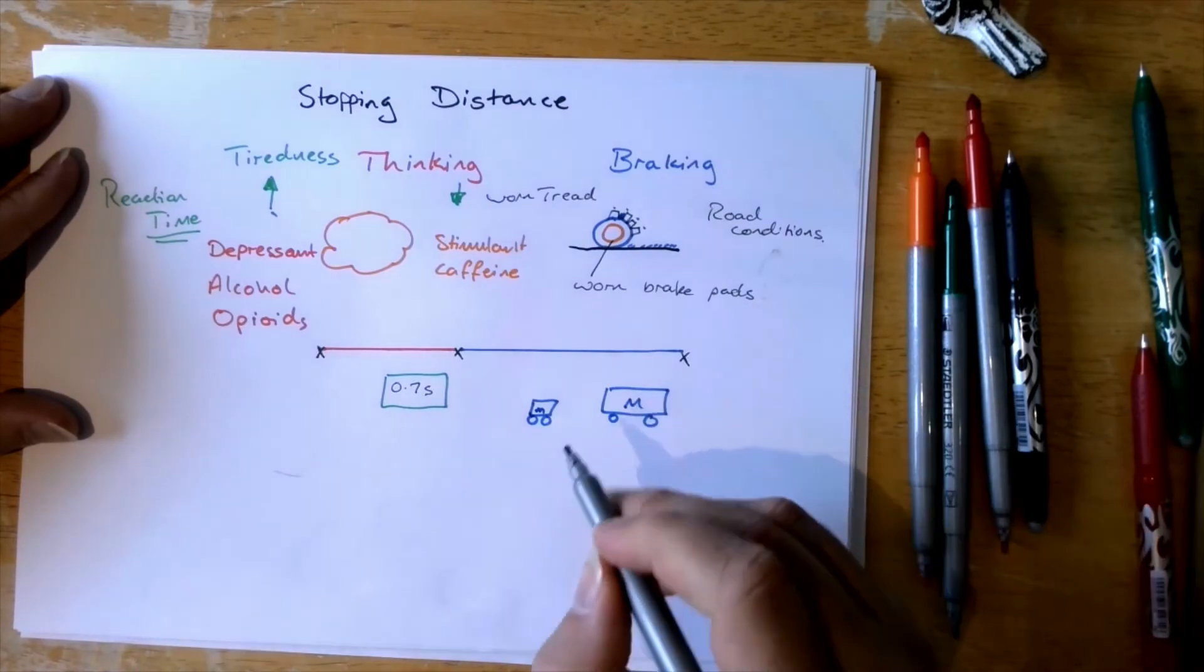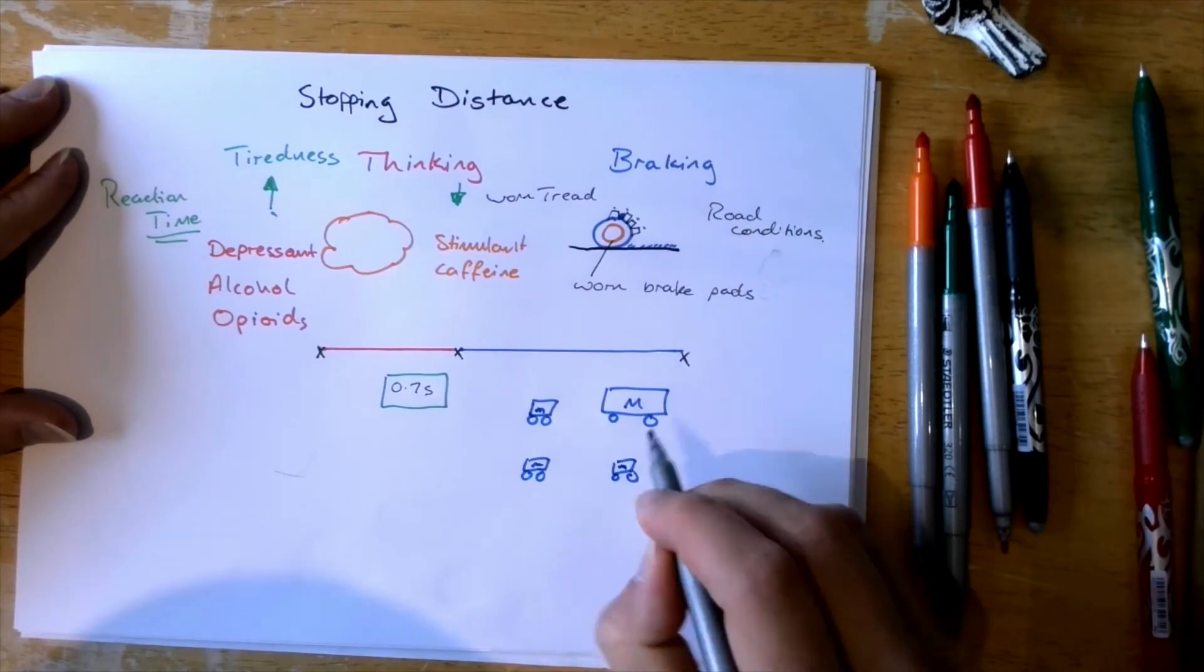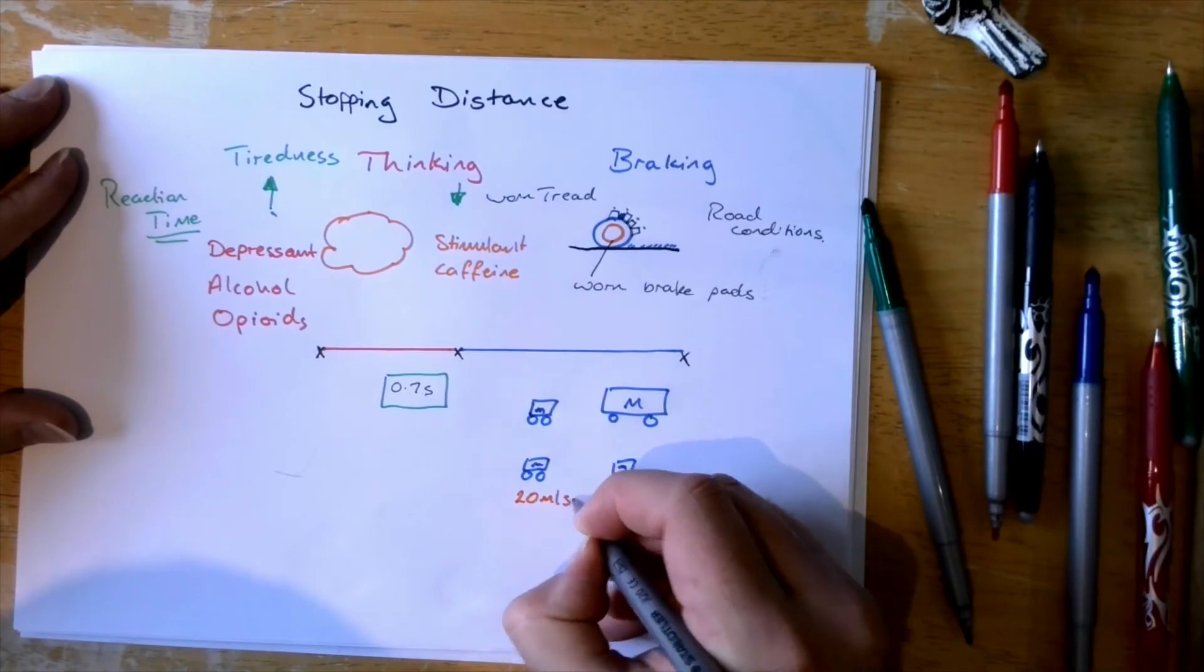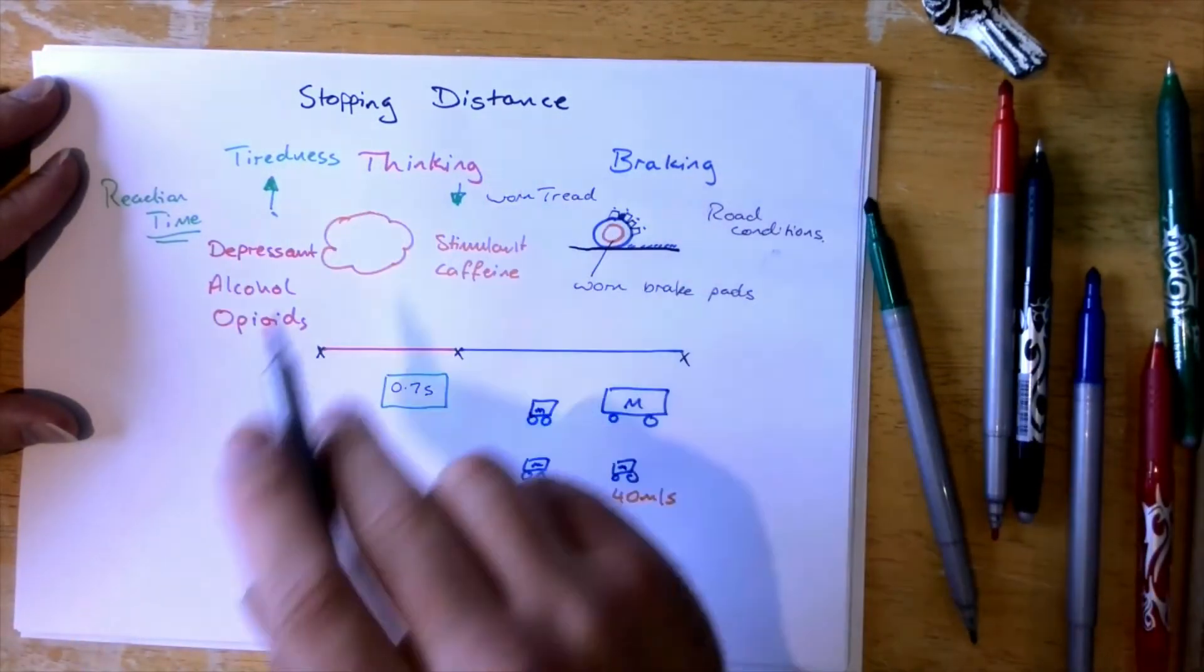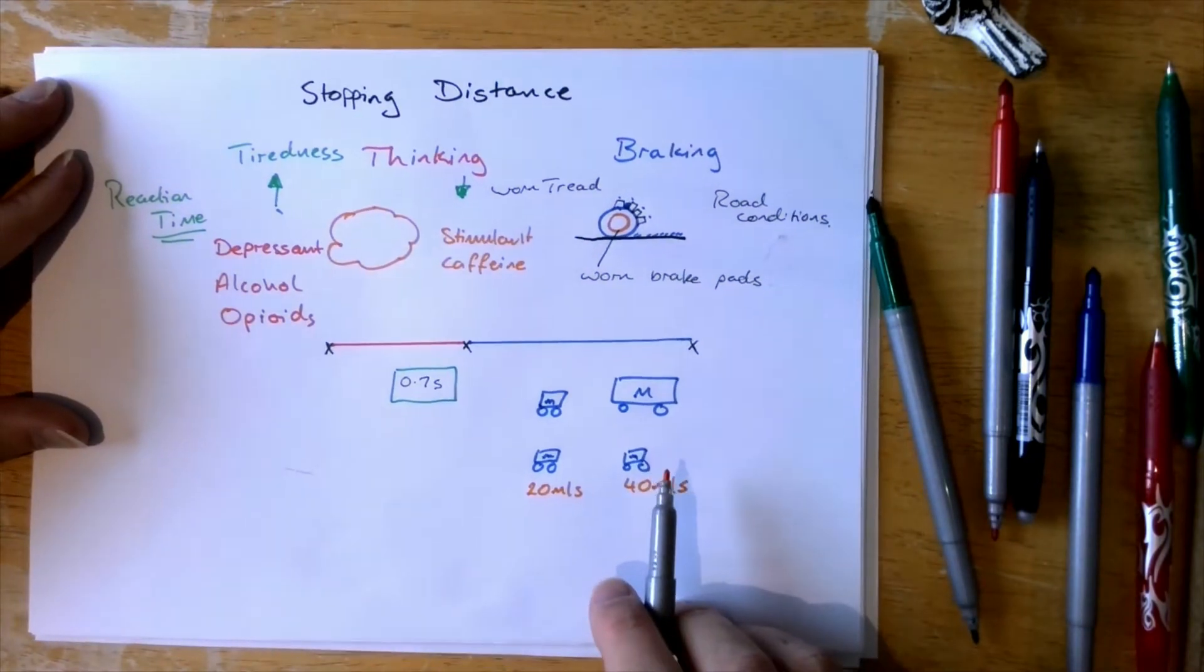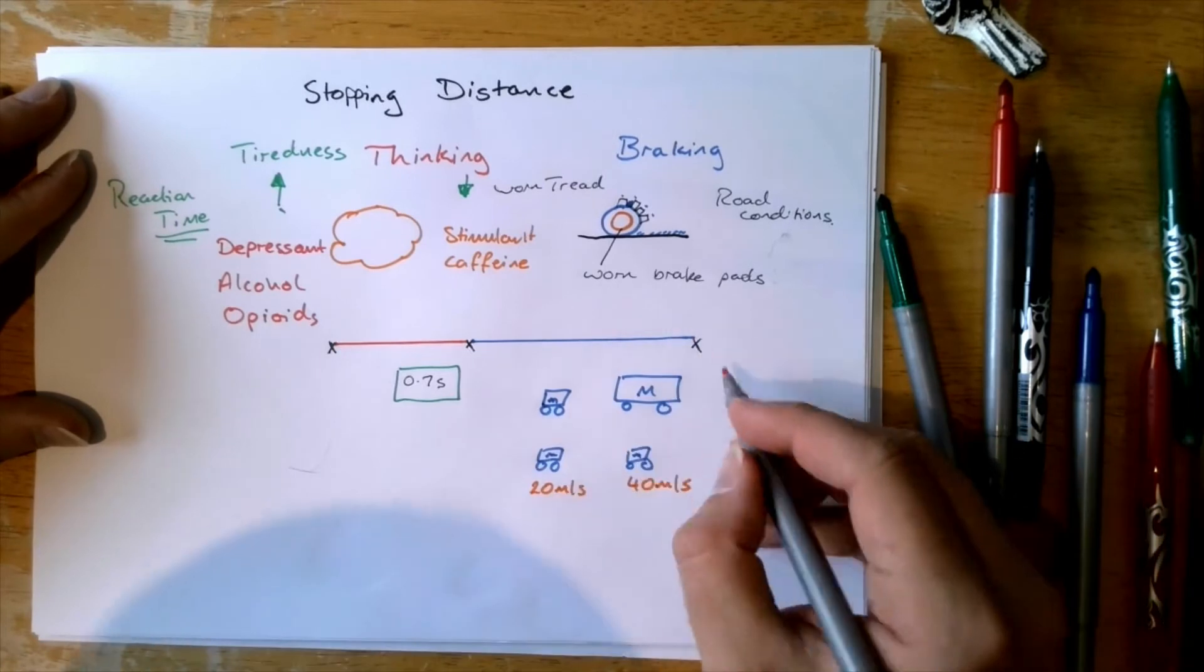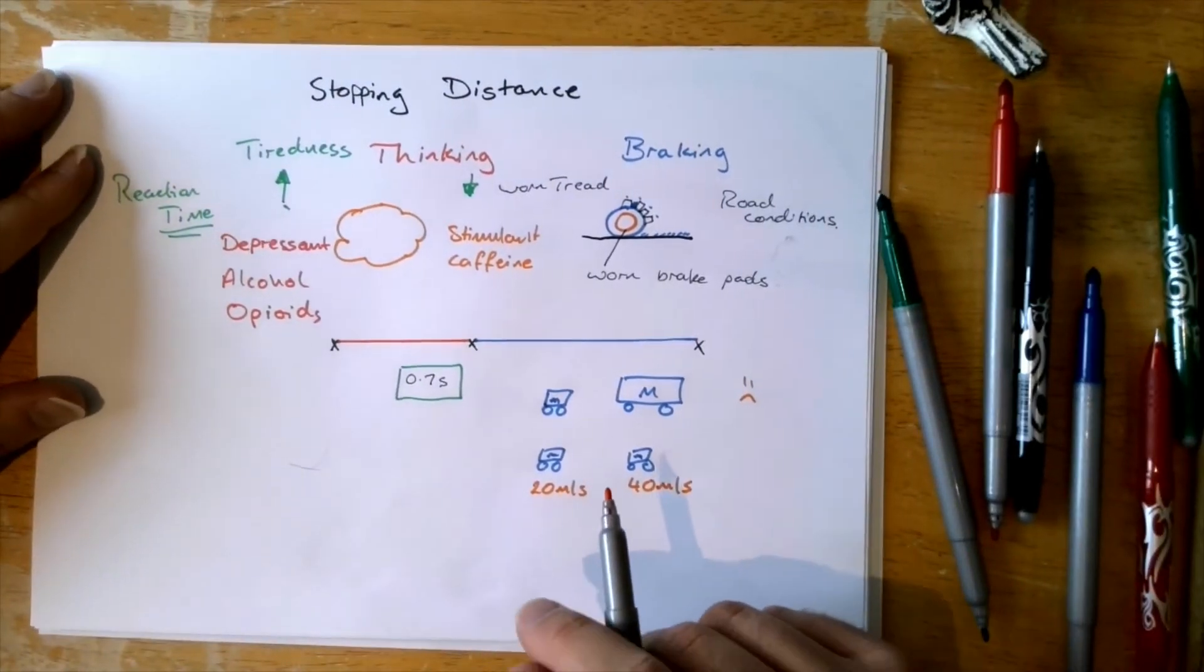The other thing that will affect it if we have two small cars. And one of them is going 20 meters per second and the other one is going 40 meters per second. That will increase your stopping distance too. Not just your braking distance but also your thinking distance. So sorry I forgot to mention that. I knew I'd forgotten something but we're doing this in one take. One take McKelvey.